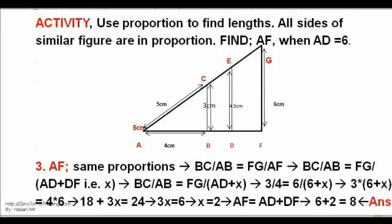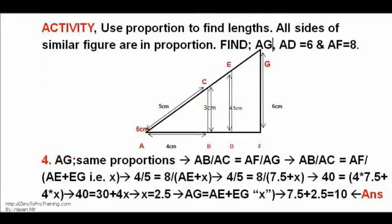Activity 3 and Activity 4. Use proportions to find lengths. All sides of similar figures are in proportion. AB to AC is AD to E. When AD equals 6 from the last slide, solving leads to F equals 8. Answer.